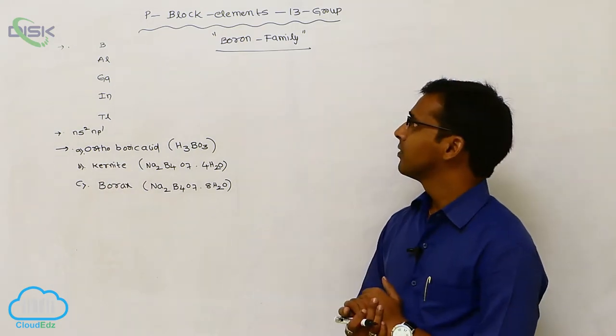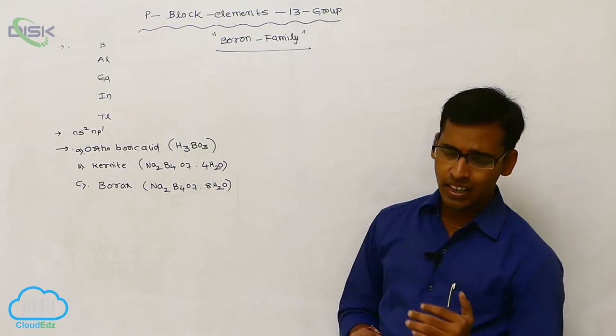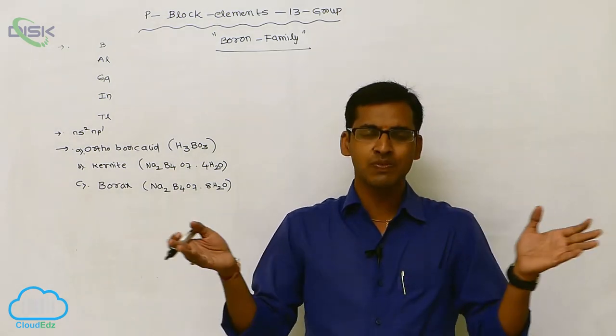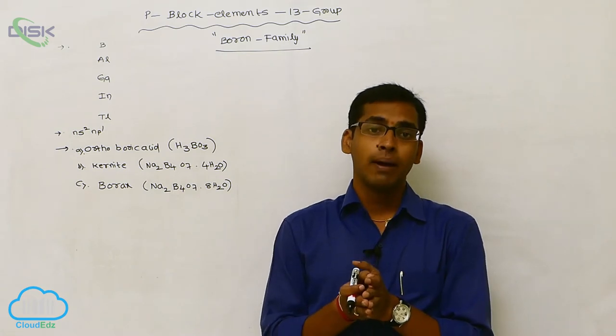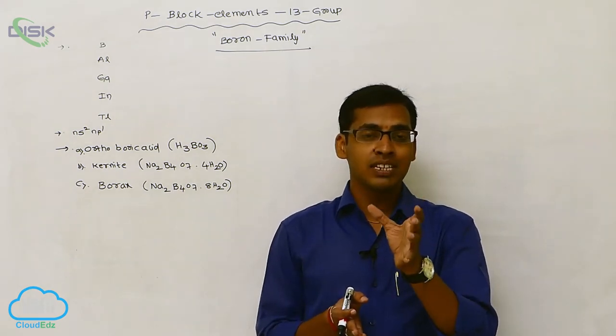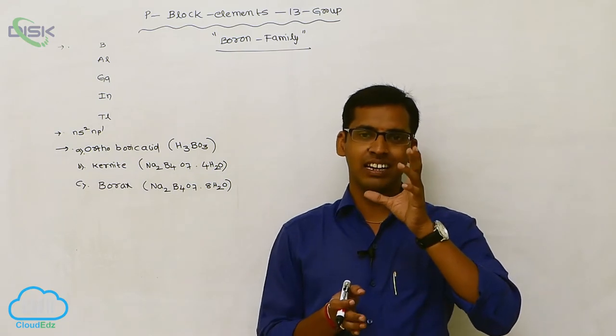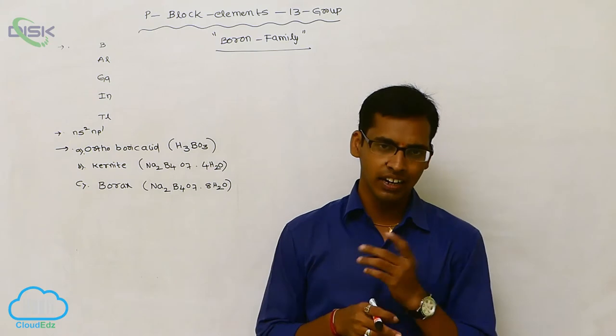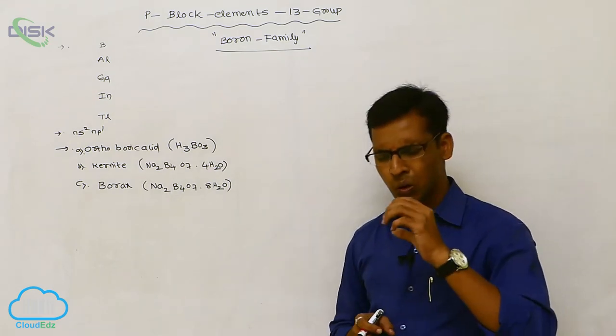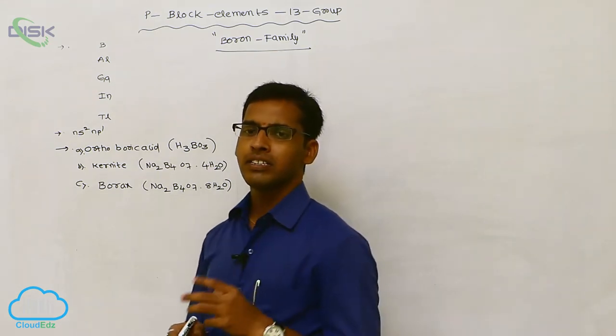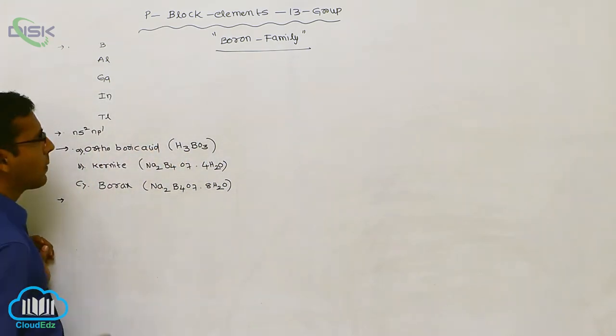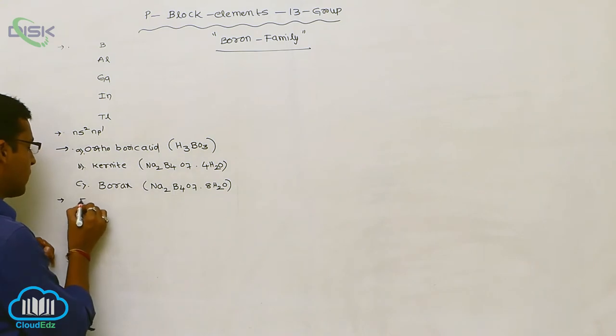These 13A group P block elements exhibit various physical properties. However, their chemical and physical properties are very similar compared to other group elements like the 14th, 15th, 16th, 17th, and 18th groups. Now we will discuss these properties, starting with electronic configuration.